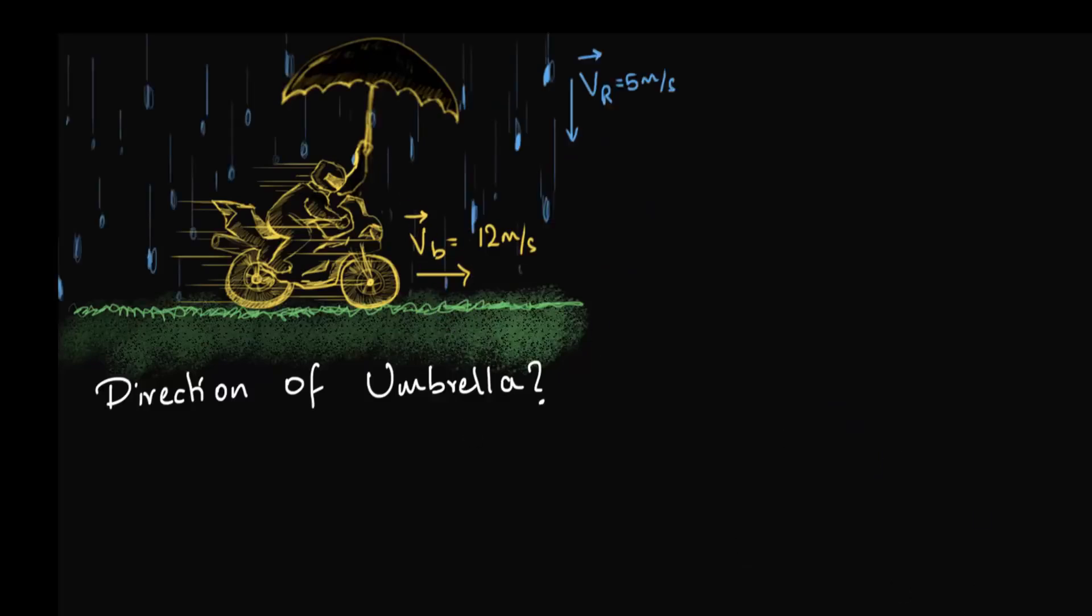So, let's put that umbrella down and let's think about this. The key now to solving this problem would be looking at things from the biker's perspective. In other words, we have to look at the direction of the rainfall as seen from the bike or with respect to the bike.